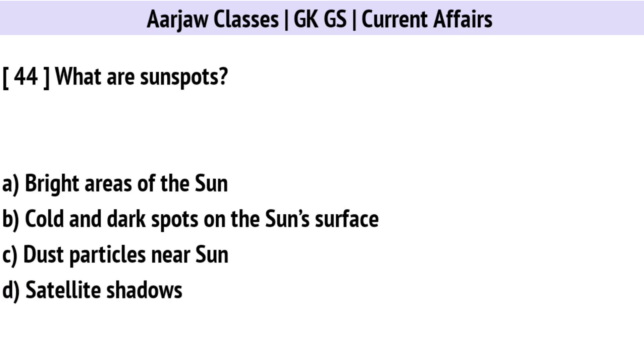What are sunspots? Correct option is B: Cold and dark spots on the Sun's surface.